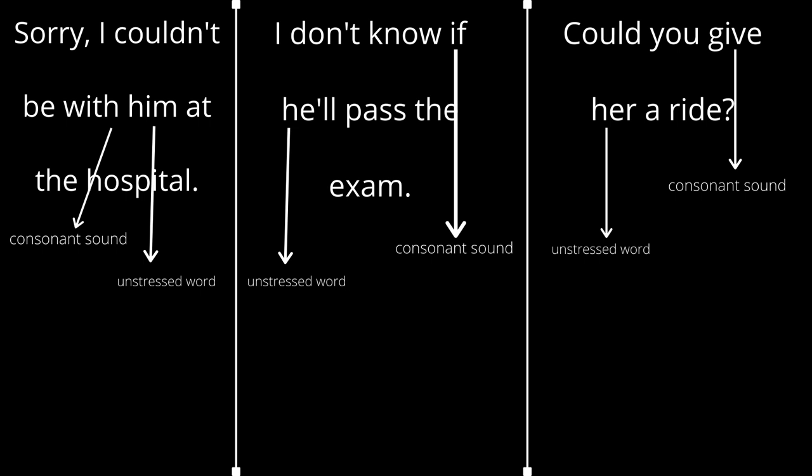Next, we have: 'Could you give her a ride?' The elided H sound occurs with the word 'her,' because 'her' in this sentence is not stressed, and the word before it, 'give,' ends in a consonant sound — F. So we do not say 'Could you give her a ride?' — we just say 'Could you give her a ride?' And remember, 'her' is one of those words that often has the H sound elided.